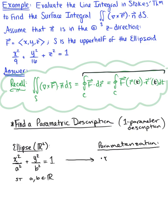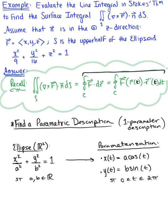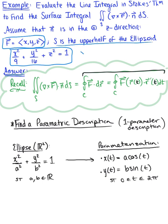The x component of your ellipse in R2 is x(t) = a·cos(t), and the parametrized y component is y(t) = b·sin(t), where t ∈ [0, 2π]. We have a vector field in R3, so there is still a z component. Since S is the upper half of the ellipsoid, z ≥ 0. And since we're talking about an ellipse in the xy-plane, the z component is zero — so z(t) = 0.